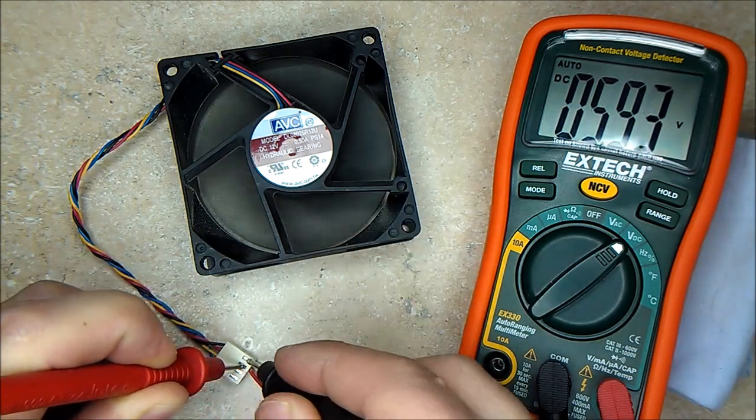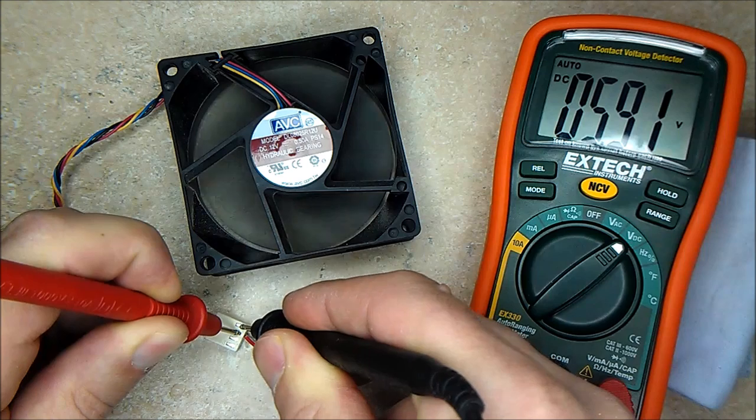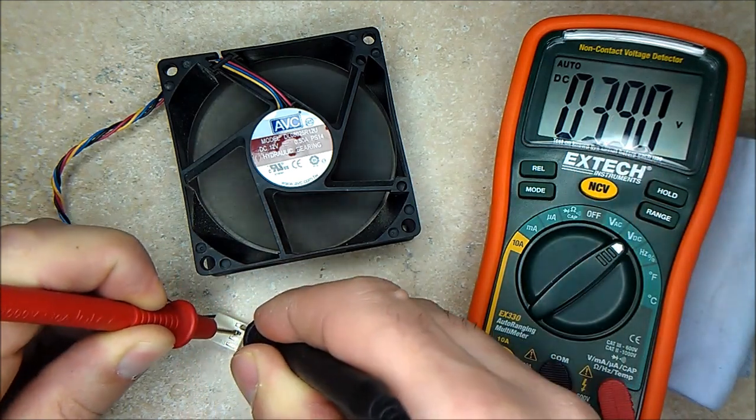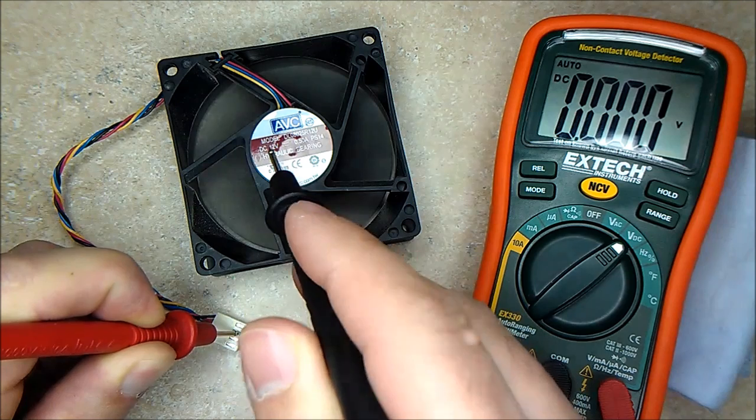If the fan was not working and when you probe it you get 5 volts, 6 volts, or whatever it is, that means your fan is bad.